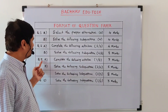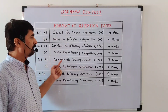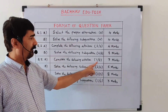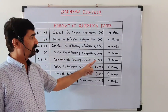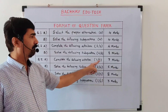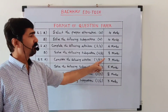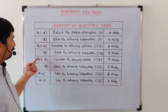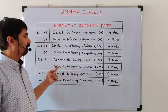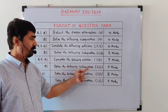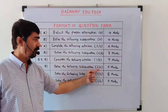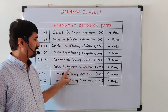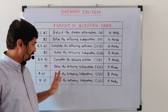Question 3A is 'Complete the following activities.' They will provide 2 activities, out of which we solve only 1, for 3 marks — so 1 activity gives 3 marks. Question 3B is 'Solve the following sub-questions.' They provide 4 questions, out of which we solve 2, for 6 marks — each sub-question carries 3 marks.